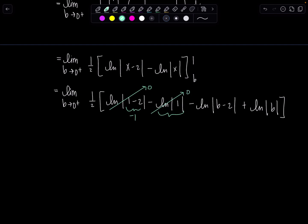Then we have ln of b is approaching zero from the right minus two, so that's negative two. But this is just going to approach negative ln of positive two once I take absolute value. And then plus ln of b.